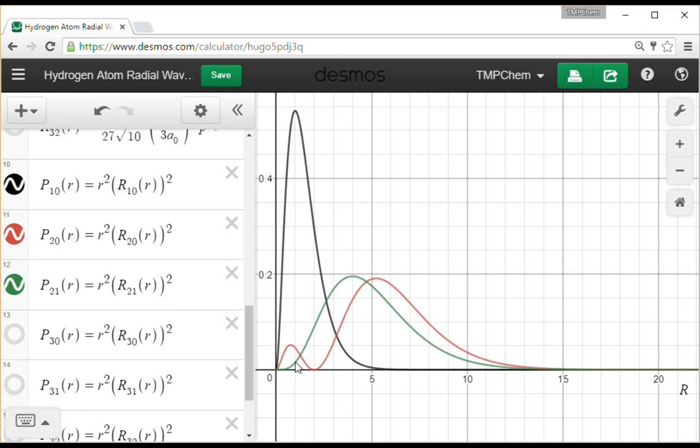For the 2p, no radial nodes, it just goes up, reaches a maximum, and goes back down. Take note that the actual maximum, the most likely radius for this p orbital, is actually inside that of the 2s orbital. So 2p is actually inside the value for 2s.